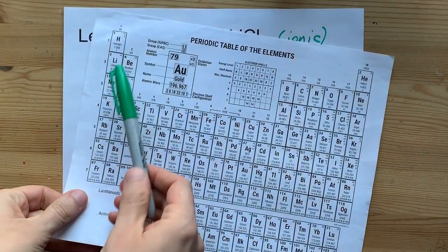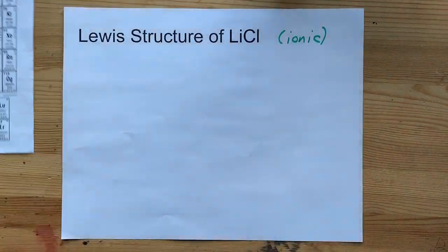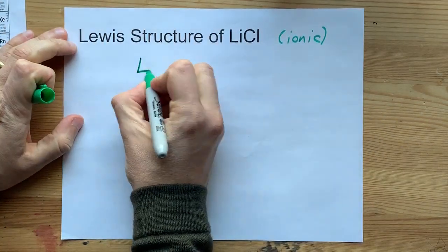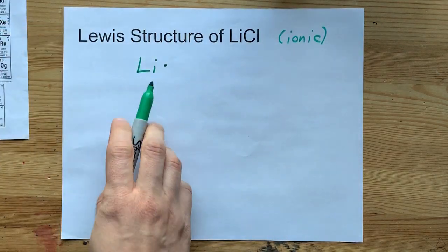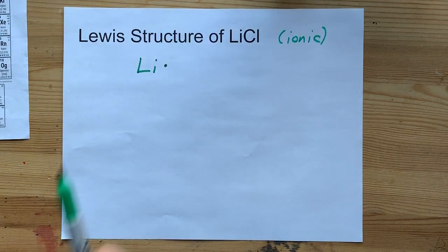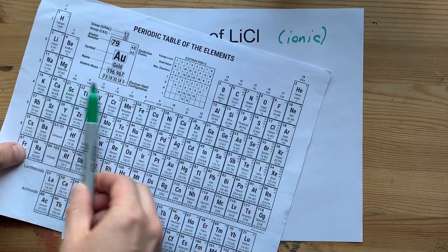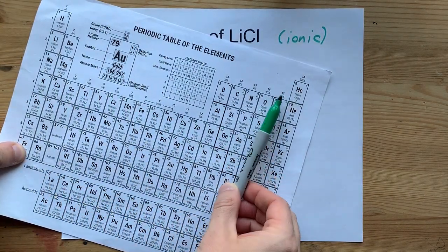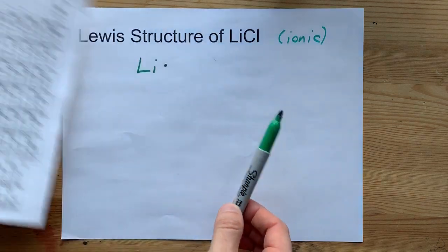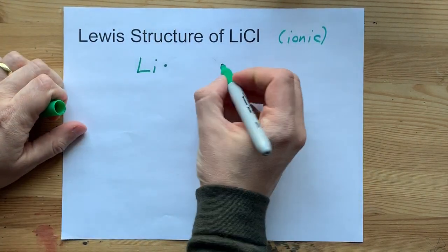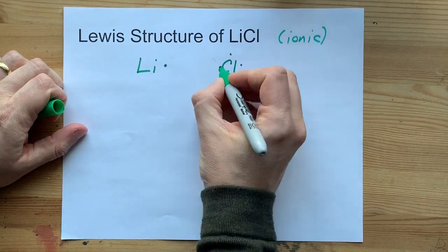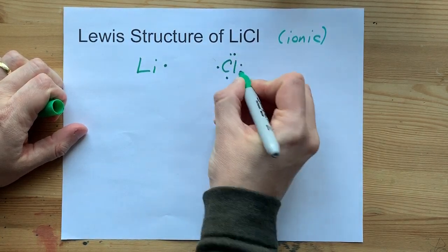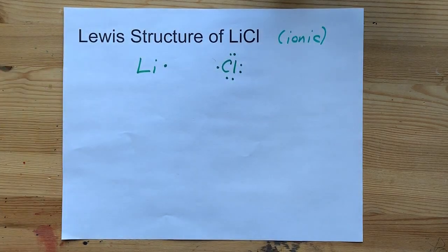Let's start with lithium. Lithium is in the first column, so it brings one valence electron with it. In a Lewis structure, you just show it with a single dot — one valence electron. Chlorine is in group 17, which has seven valence electrons. That's Cl with 1, 2, 3, 4, 5, 6, 7 valence electrons.